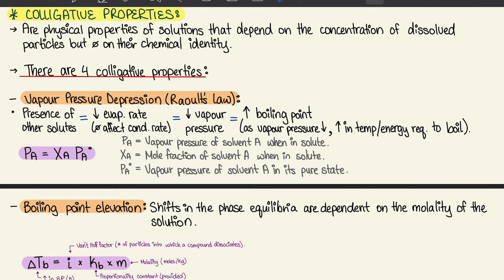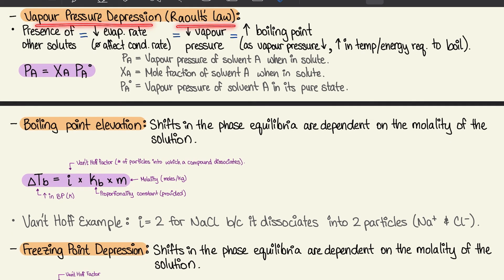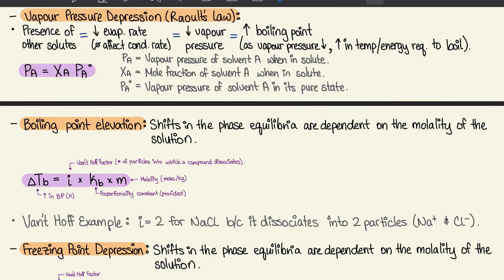Section 9.4 covers colligative properties: physical properties of a solution dependent on the concentration of dissolved particles, not their chemical identity. The first is vapor pressure depression (Raoult's Law): dissolved solutes decrease the evaporation rate without affecting condensation rate, lowering vapor pressure. The equation is Pₐ = Xₐ × Pₐ°, where Xₐ is the mole fraction of solvent a and Pₐ° is the pure vapor pressure.